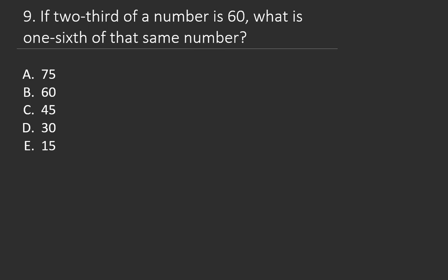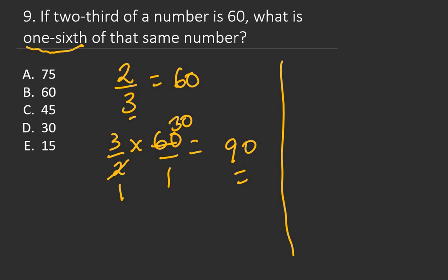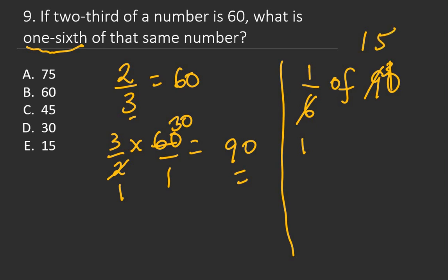Question 9: If two-thirds of a number is 60, what is one-sixth of that same number? To find the number, flip the fraction: 3/2 × 60 = 90. Now find 1/6 of 90: 1/6 × 90 = 15. The right answer is E: 15.